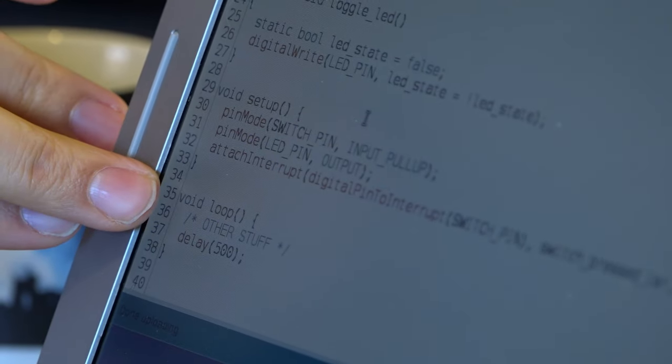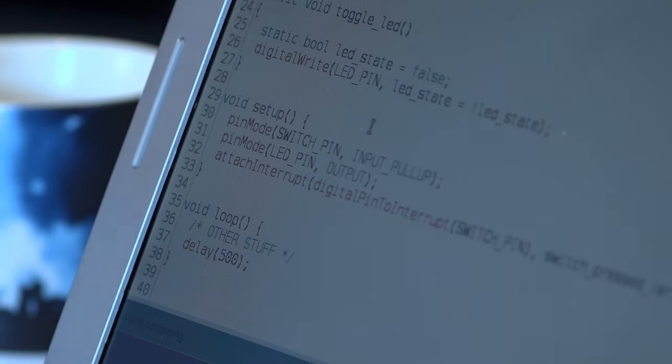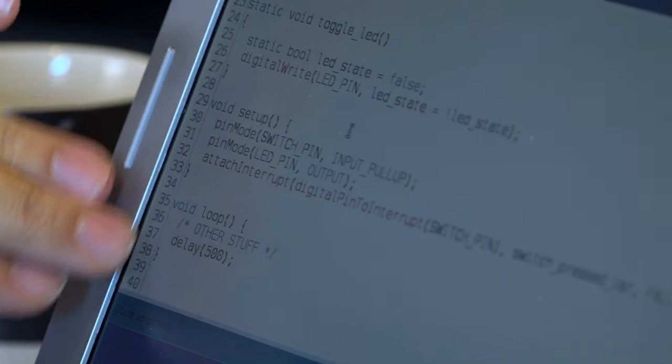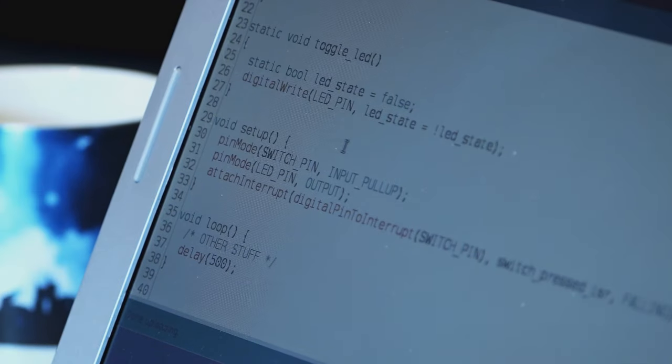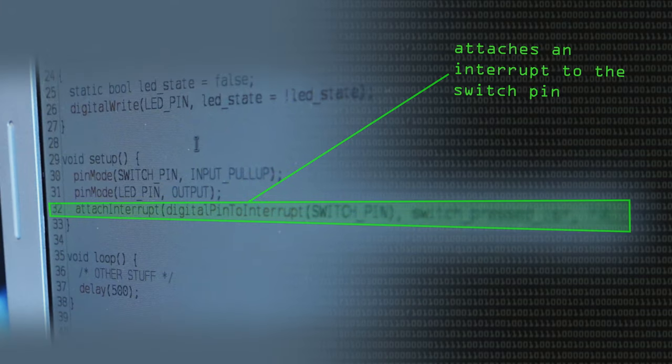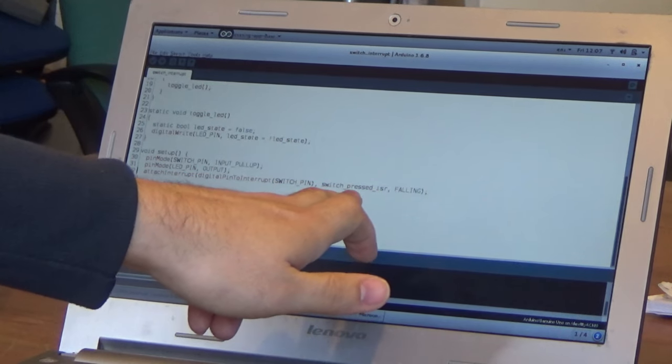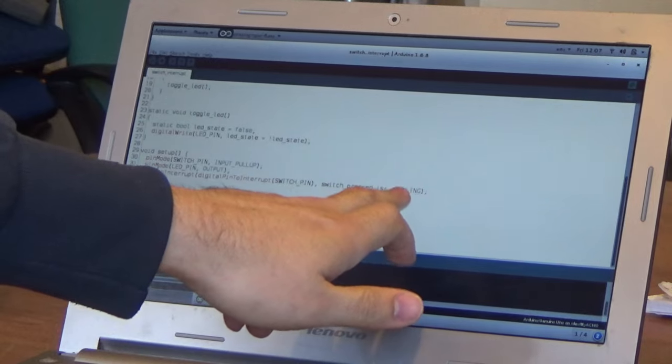Here's the same code. Now, we've taken the switch polling out of the loop. There's just our other stuff in there. And instead, in the setup on this line here, we've attached an interrupt to the switch pin. That's going to call our switch pressed ISR function. And the falling just means we're going to respond to a particular event only when it's pressed, not when it's released.